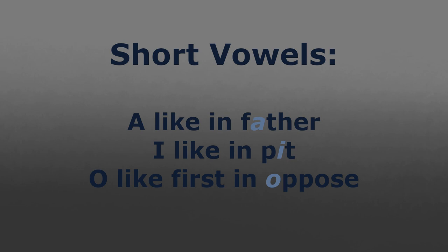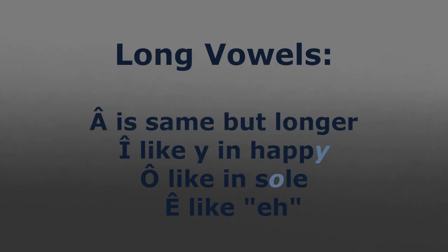It is important to note the sounds are different than in English. Short A is said like in "father"; short I is said like the E in "pet"; and short O is said like the first O in "oppose." The long vowels are a little different than their short counterparts. Long Â is the same as short A, but longer. Long Ê is said like the Y in "happy." Long Ô is like the O in "soul." Finally, long Î is said like the famous Canadianism, "eh."